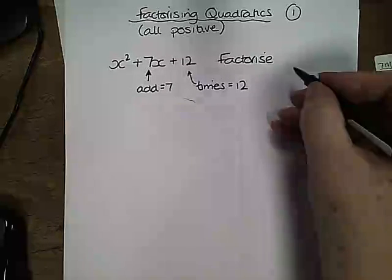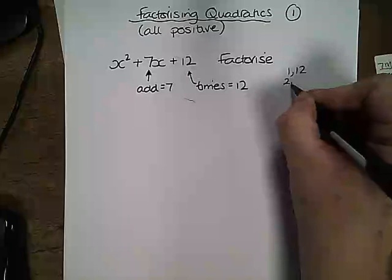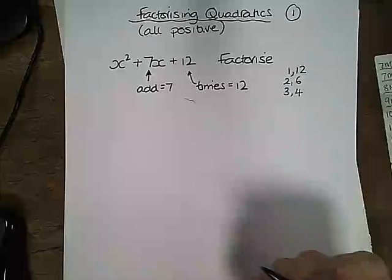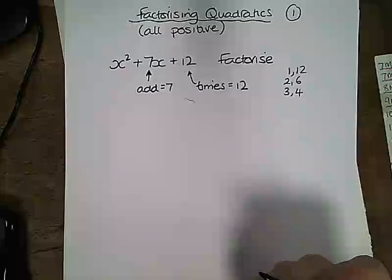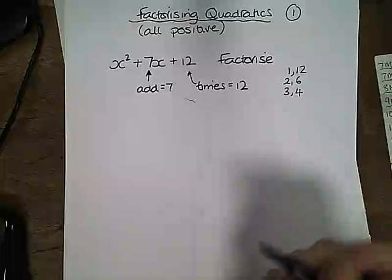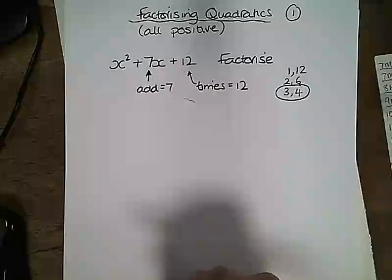We start with the factor pairs of 12. So the factor pairs of 12 are 1 and 12, 2 and 6, 3 and 4. Then we look and see if by adding the factor pairs together we can make the total 7. In this case if we add 3 and 4 we get 7 and if we multiply 3 and 4 we get 12.